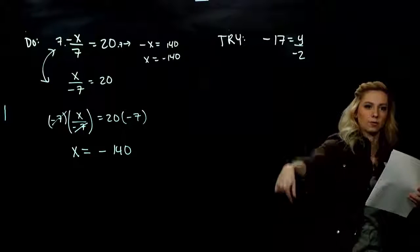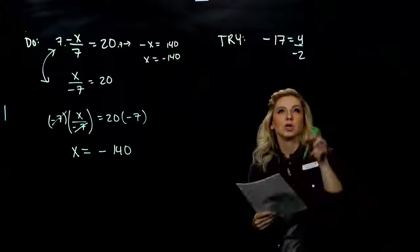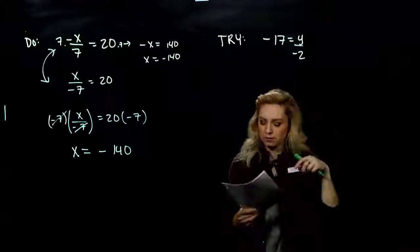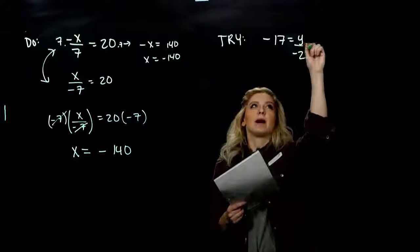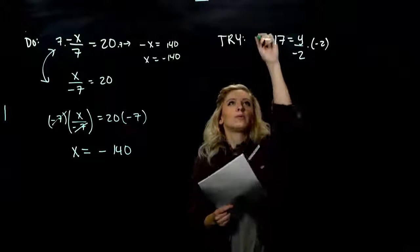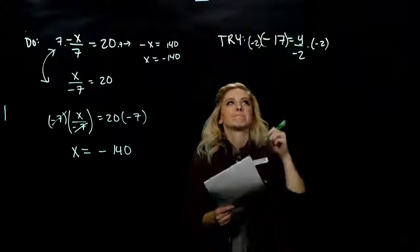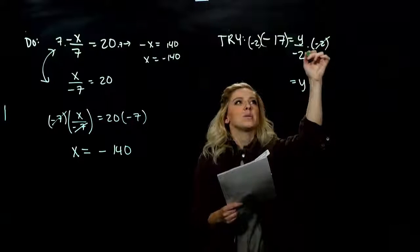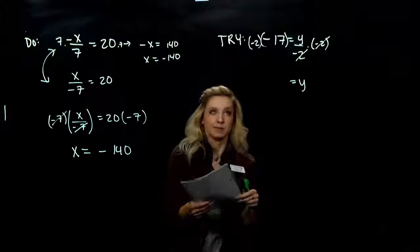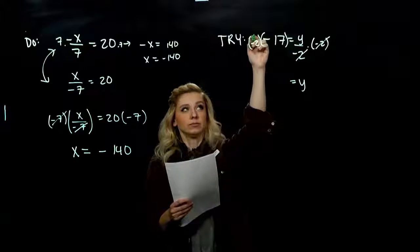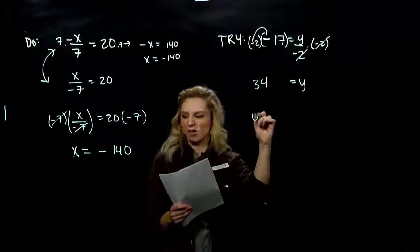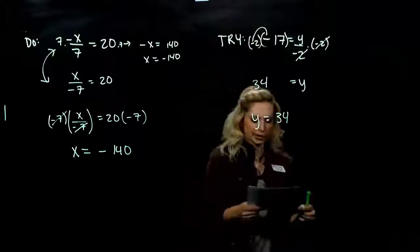Solve for y. In this case the negative is already assigned to the 2, so when I multiply by the reciprocal, y is already going to be positive. The reciprocal of 1 over negative 2 is negative 2. Whatever we do to one side, we have to do to the other. So same thing divided by the same thing gives us 1, leaving y. On the left, negative 17 times negative 2: negative times negative gives a positive, so we get 34. Reading left to right: y equals 34.